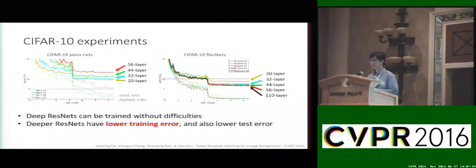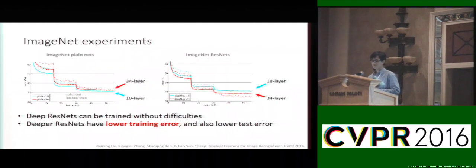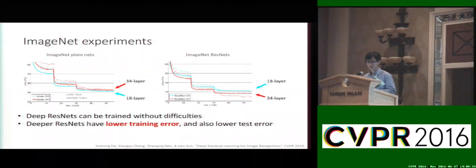Here are the results on the CIFAR-10 dataset. On the left, results of plain networks show that as depth increases from 20 to 56, both training and testing error increase. On the right, results of ResNet show that when depth increases from 20 to over 100 layers, both training error and testing error are reduced. This phenomenon is also observed on the ImageNet dataset, where a 34-layer ResNet is better than its 18-layer counterpart. These results indicate that deep residual networks can be trained without difficulties.